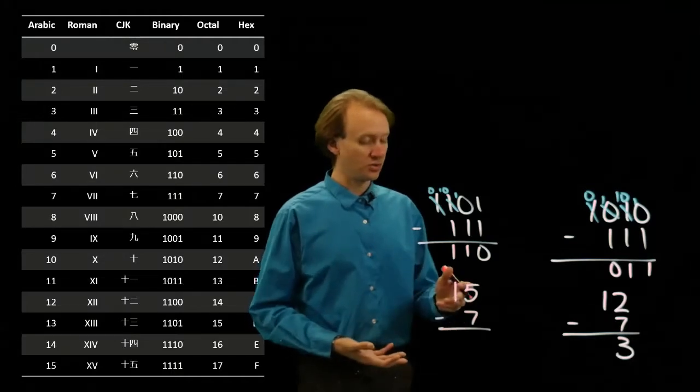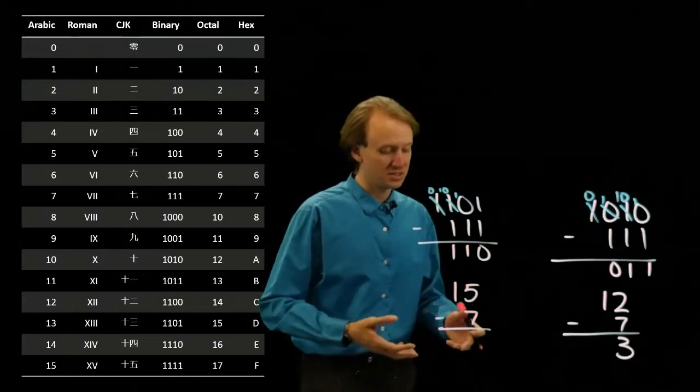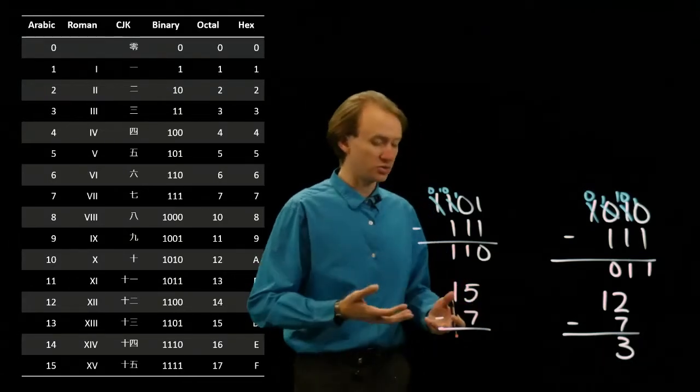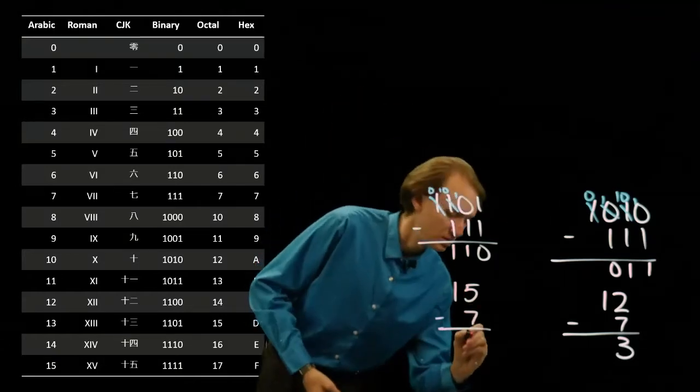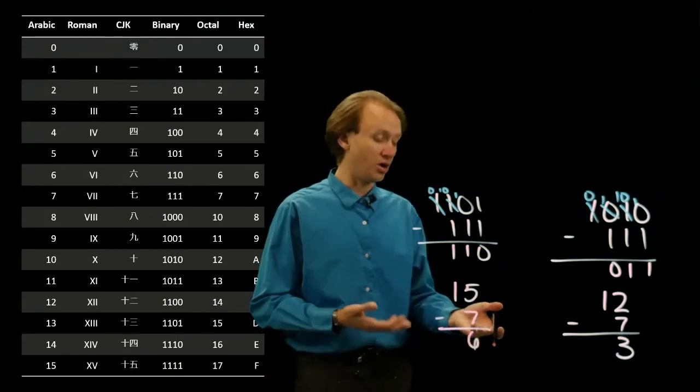Or I can do 8 plus 5 is 13. 13 minus 7 is 6. 6 in octal is also 6. So, either of those will get me to the 6 that I expect. And in this case, I do get 6, since that is a valid number in octal.